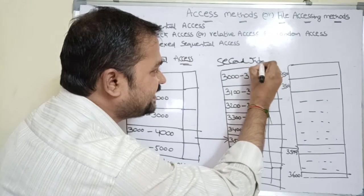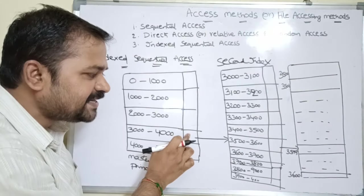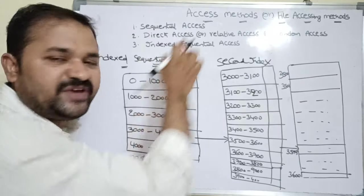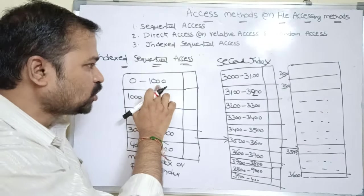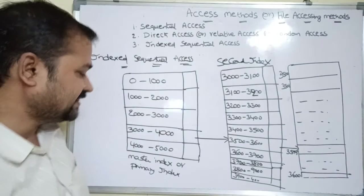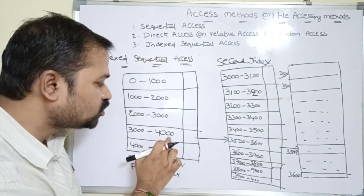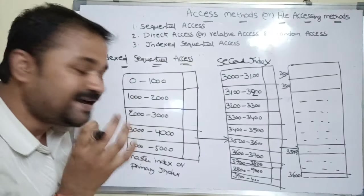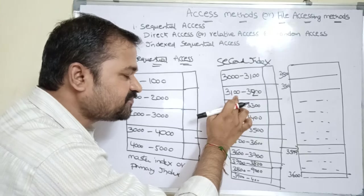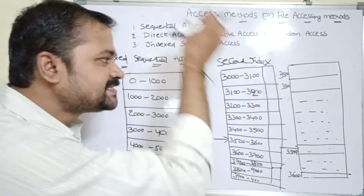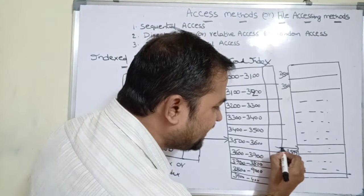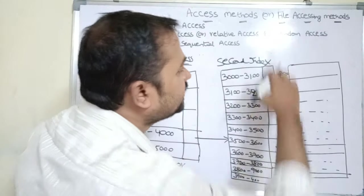The master index or primary index contains a pointer which holds the address of the secondary index. For each block, we have a separate secondary index. For example, from 3000 to 4000 we have a secondary index, which divides those 1000 records into 10 blocks of 100 records each — so 3000 to 3100 is the first block, 3100 to 3200 is the second block, and so on. The secondary index also has two columns: records and pointer, where the pointer contains the actual data address of the corresponding record.